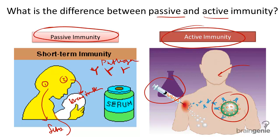So an example of active immunity is an immunization. When you receive a vaccination or an immunization, you are intentionally getting a small dose of an antigen, so that if you are ever exposed to that antigen again in the future, your body will have the memory cells to fight it off.